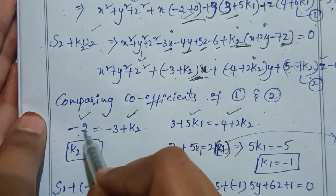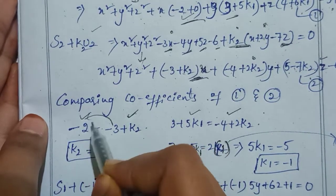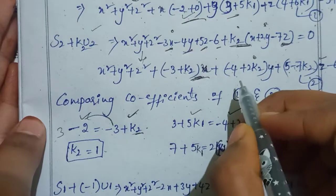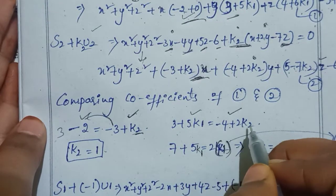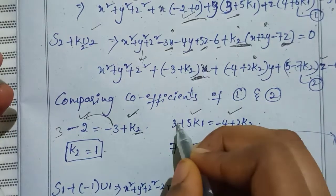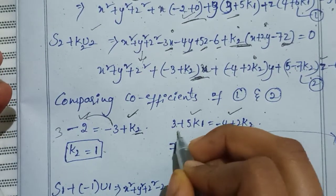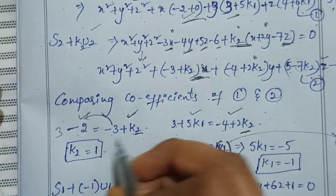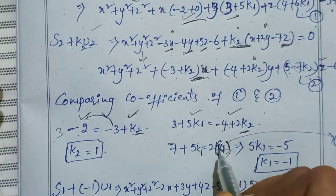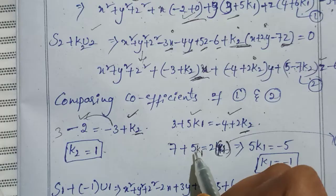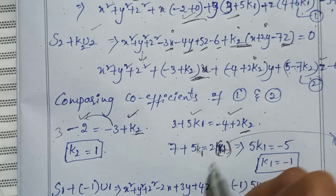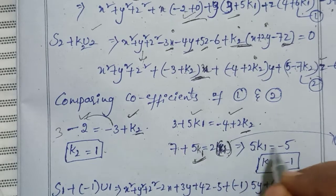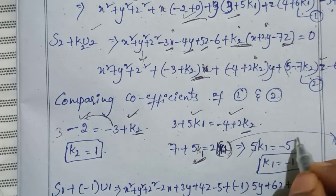From -3+K2=-2, we get K2=1. From 3+5K1=-4+2K2, substituting K2=1: 3+4=7, so 7+5K1=2. This gives 5K1=-5, therefore K1=-1.